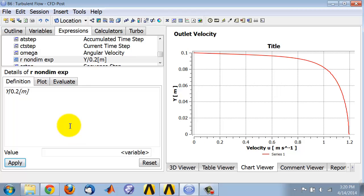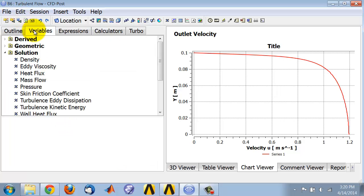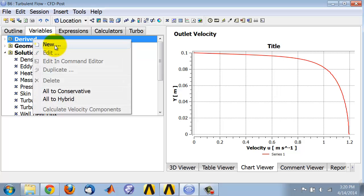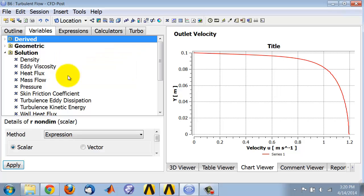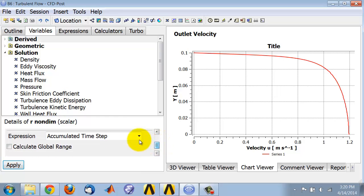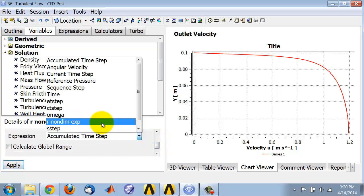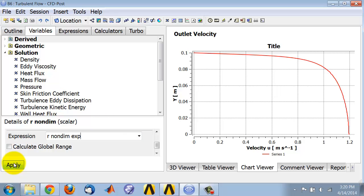Then I'll come into variables, right click on derived, and say new. I'll call this variable r non dime, and I will create it from an expression—specifically the expression that I created just a little while ago.